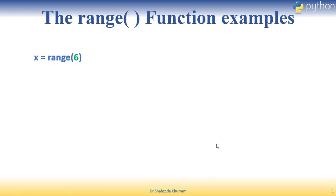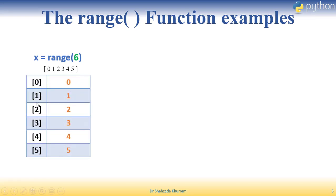For example, if I say x = range(6), we have given a simple range of 6. By default it starts with zero, so it will store 0, 1, 2, 3, 4, 5. The indexing starts at zero: index 0 has value 0, index 1 has value 1, up to index 5 with value 5. The last value is stop minus one, so 5 is stored, not 6.